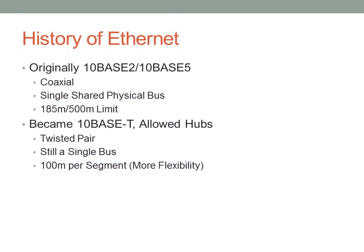Eventually, as technology developed, they started to implement 10BaseT. 10BaseT used a twisted pair cable instead of a single shared coaxial bus. They still, however, by using hubs, formed a single physical bus in terms of the actual wiring — I'll have a diagram for that on the next slide. 10BaseT lowered the cable length limit from 185 to 100 meters, but you no longer had to run cables from one computer to the next. You could connect all computers to a central device — a hub — allowing for a much more flexible network topology.